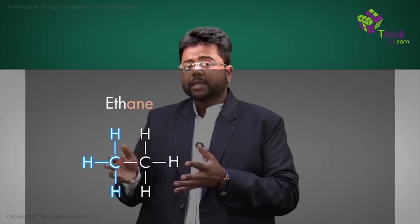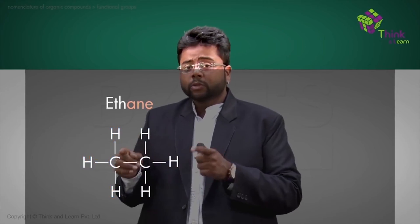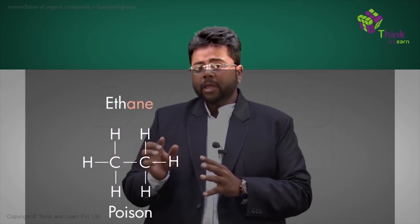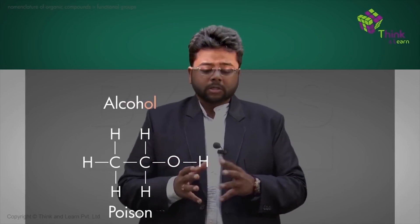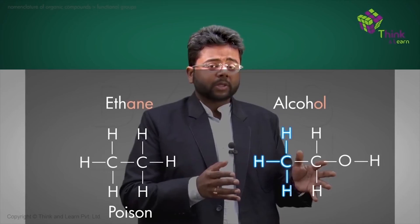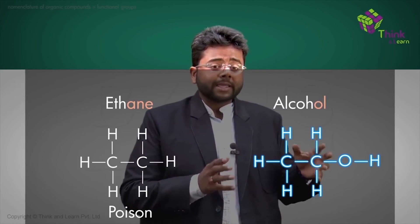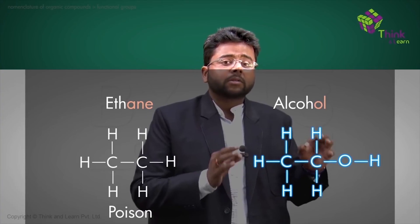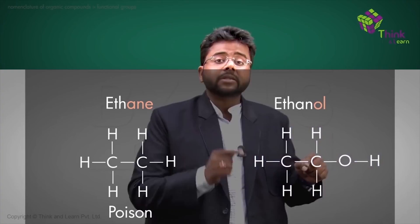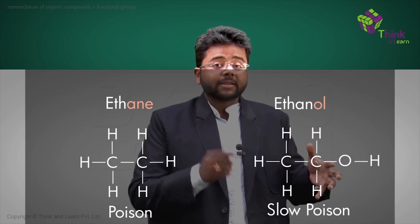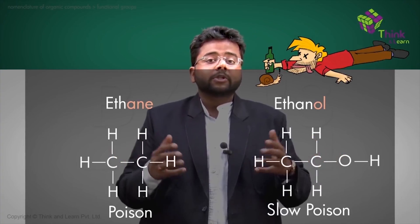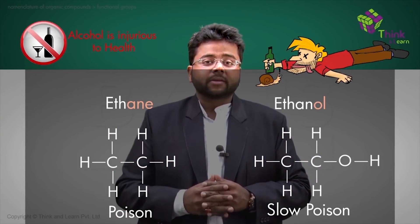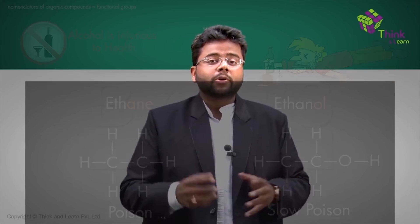If I take one more example, I have ethane which is CH3 single bond CH3. Now this is a poison. But if I add one oxygen to one of the bonds between carbon and hydrogen, I get CH3CH2OH. Now what is this? Yes, this is an alcohol — this is called ethanol, and this is a slow poison. This is the actual alcohol which people drink and it kills them slowly rather than instantly. That is the difference that a functional group makes to a compound.